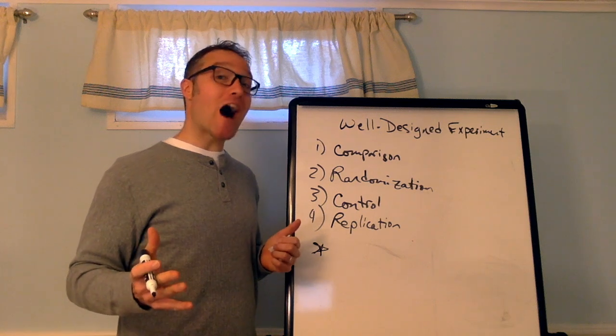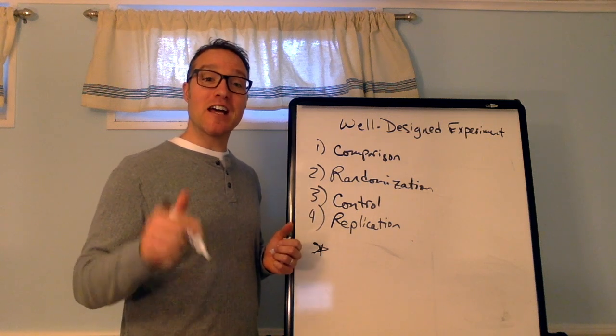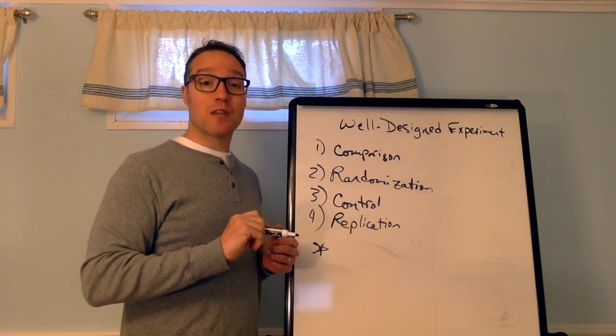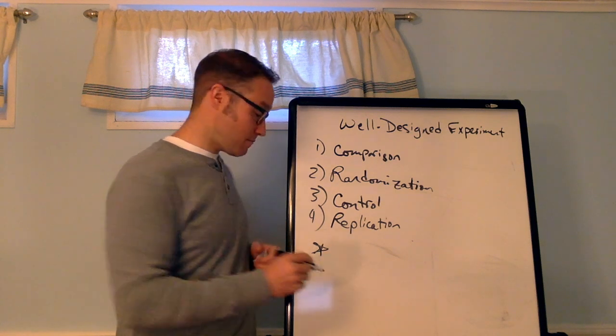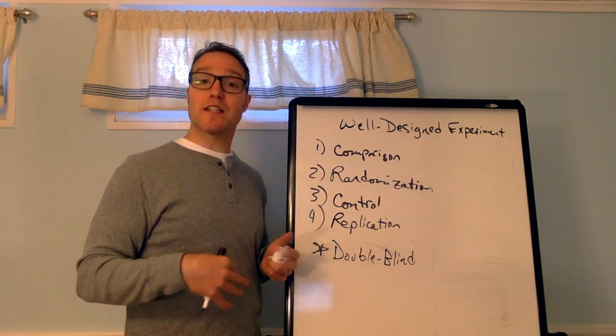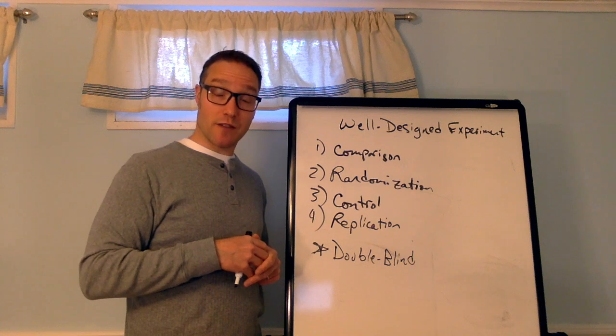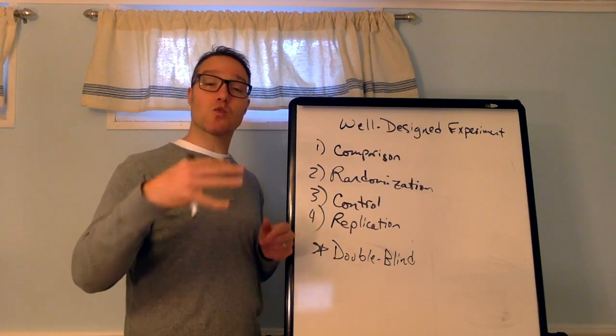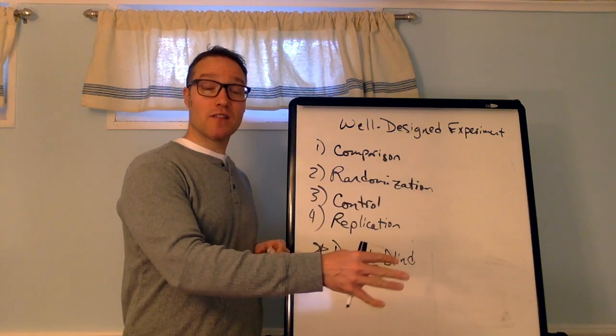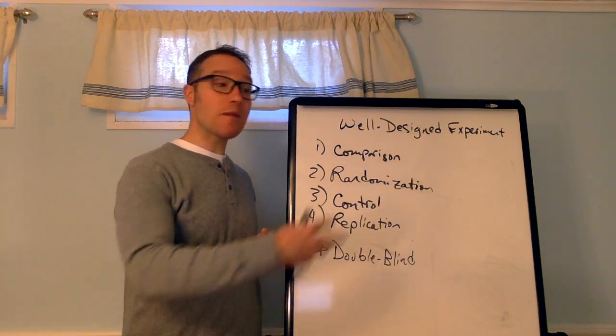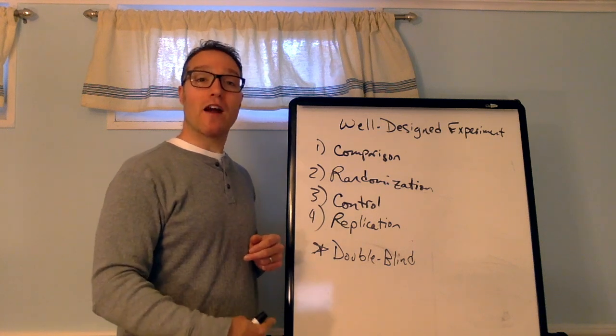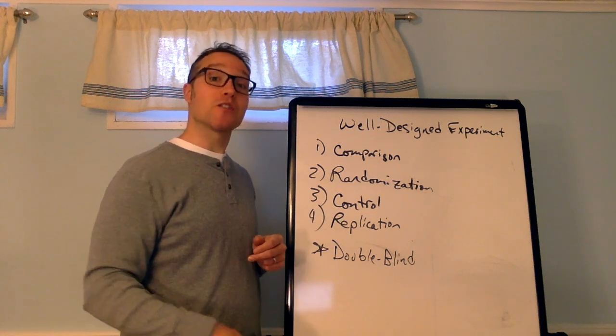Now, blinding or double-blinding should be used when possible to avoid unconscious differences in treatments. Blinding means that the person involved in the study, the participant, is unaware of what treatment they're receiving. Double-blinding is when the participant and the researcher that's interacting with the participant, so maybe the doctor administering the pill, are both unaware of what treatment group the participant is in.